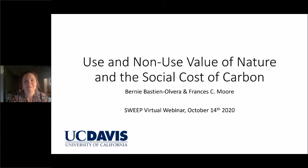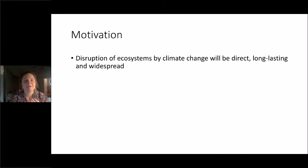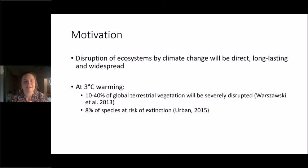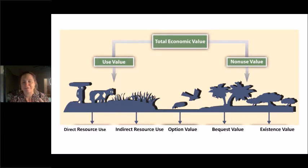What's the overall motivation for this paper? Well, we know that the disruption of ecosystems by climate change will be direct, long-lasting, and widespread. The effects on natural systems are some of the most immediate and obvious impacts of climate change. For instance, at three degrees of warming, it's estimated that between one and forty percent of global terrestrial vegetation will be severely disrupted, and about eight percent of species will be at risk of extinction.